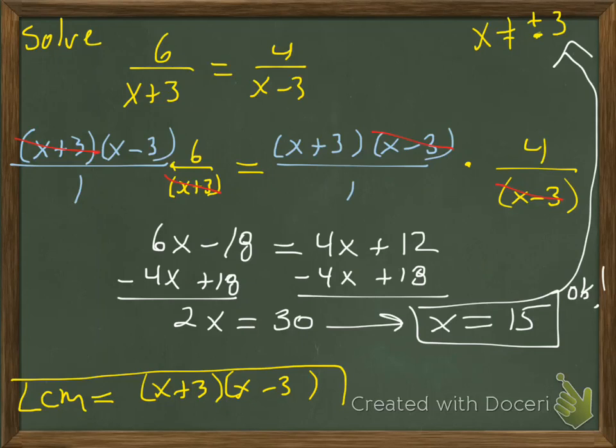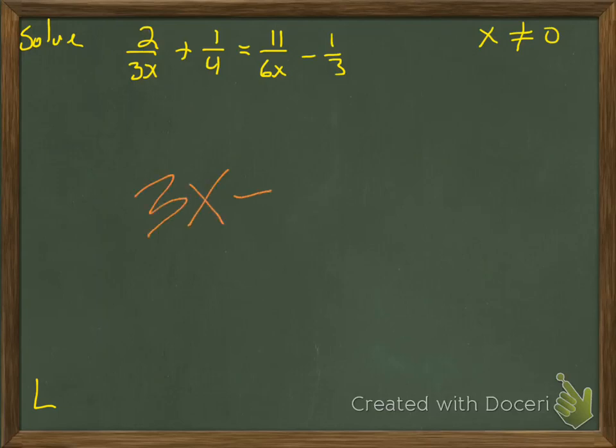If I want to, I can plug it in and see if it works, but I'll let you do that on your own. We'll move on to another one. Let's say we want to solve 2/3x + 1/4 = 11/6x - 1/3. Here, x cannot be 0. So I have 3x cannot be 0, dividing by 3, x cannot be 0.